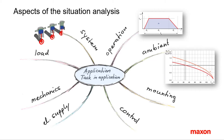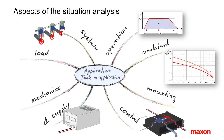Second, ambient conditions. Think of temperature, humidity, vacuum, vibration, noise, electromagnetic susceptibility. Third, electrical supply — how much current and voltage is available? Fourth, control concept — very important. Where do the set value commands come from? What to control: position, speed or torque?